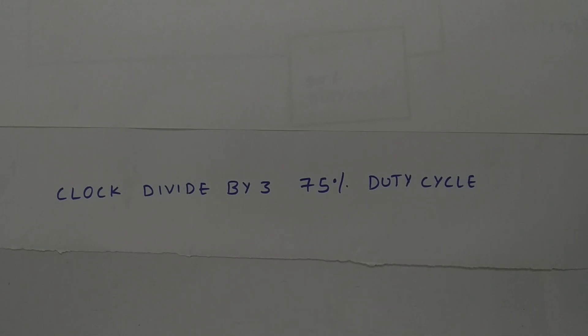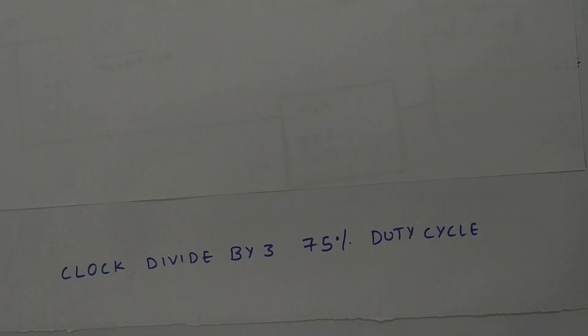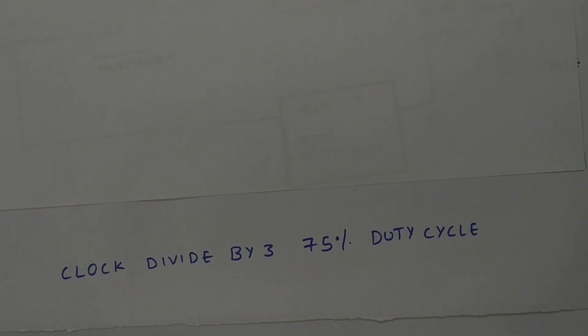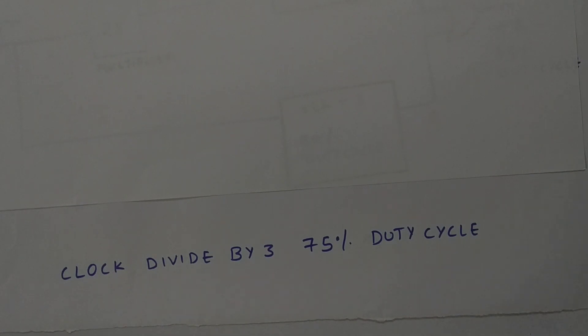Hey guys, welcome back to another interesting topic. Today's topic is about clock divided by 3 with 75% duty cycle. Before going to clock divided by 3 with 75% duty cycle, you must know clock divided by 3 with 50% duty cycle. If you don't know that, please stop this video right now and check the link in the description or press the I button, then come back.